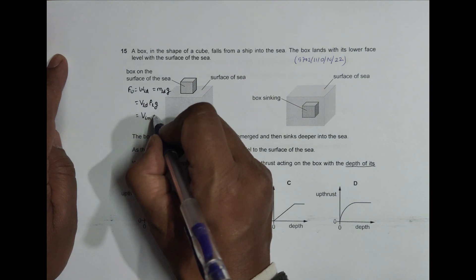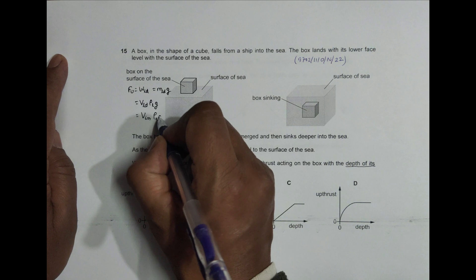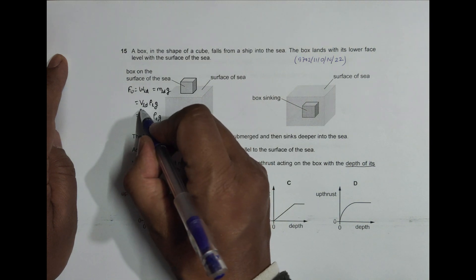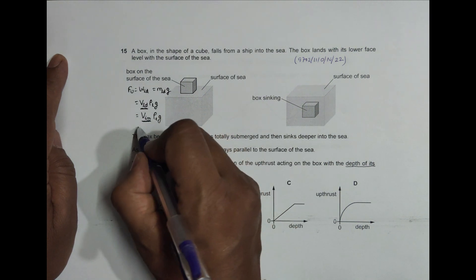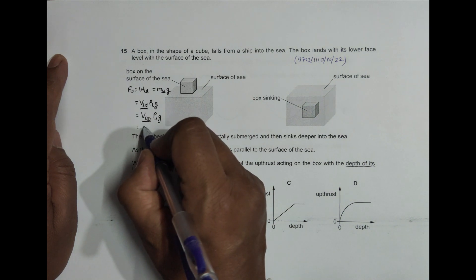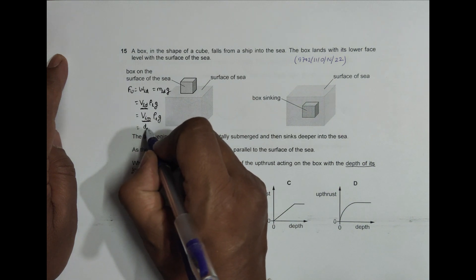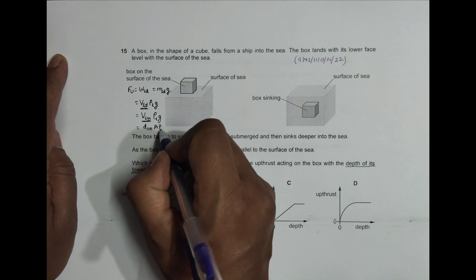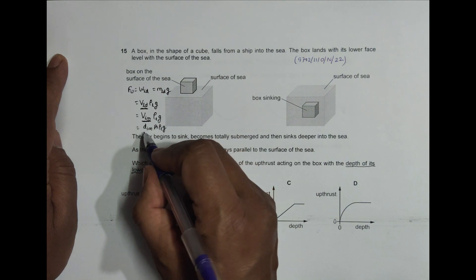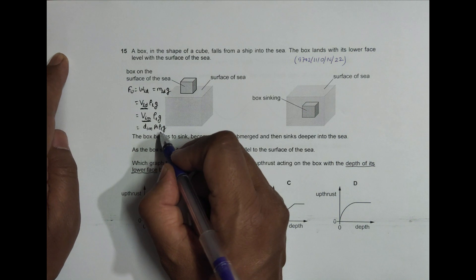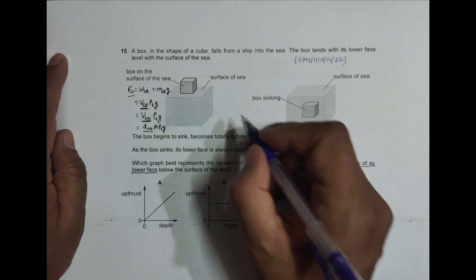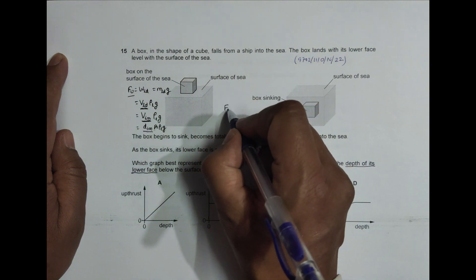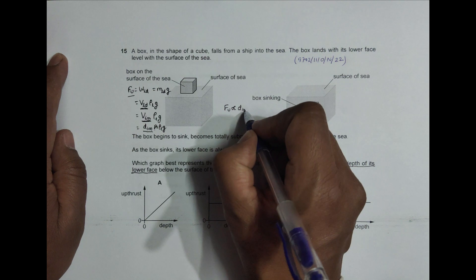The volume of the immersed portion of the solid into ρL into G — because only the immersed portion can displace the liquid. This equals depth of the immersed portion into area into ρL into G. Comparing this, the force of upthrust is directly proportional to the depth of the immersed portion, with all other terms being constant.